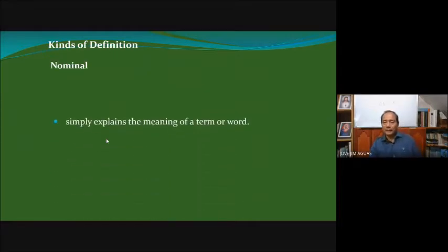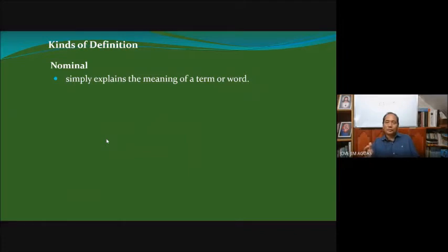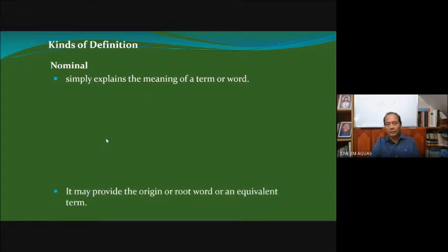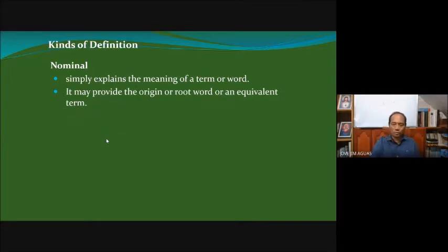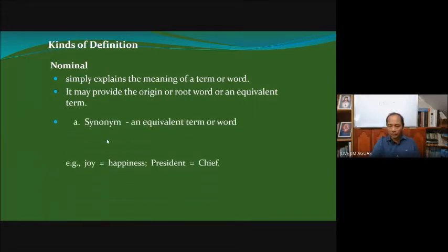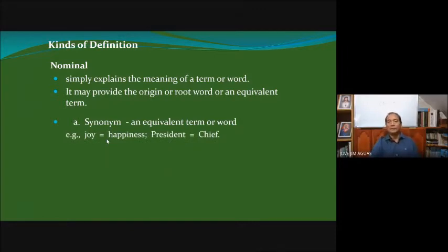There are two general types of definition: nominal and real. 'Nominal' comes from the word meaning just the name — we are simply defining the word, not necessarily what the word really is. It's a simple meaning of the term or word. You may provide the origin or root word, or an equivalent word like a synonym — for example, 'happy' is 'joy,' or 'father' is 'papa.'